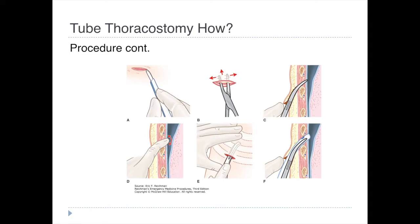Use the Kelly clamp to bluntly dissect through the subcutaneous tissue in a cephalic direction to the rib above. Once we get to that rib, orient our clamp right above the superior border, and forcefully push it into the pleura — you may need a twisting motion. Reichmann's also suggests using your opposing hand to provide counterforce so as not to push it too far into the pleural cavity. Once inside, spread the jaws of the clamp to enlarge and dilate that tract. Place your finger through the subcutaneous tissue, through the intercostal muscles, into the pleural cavity, and break apart any loose adhesions. If you feel too many adhesions, consider going at a different site.